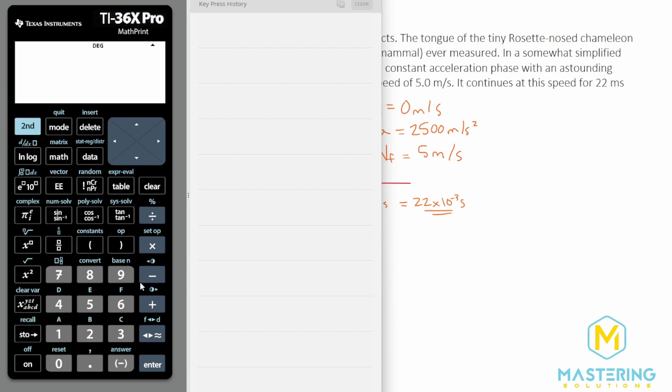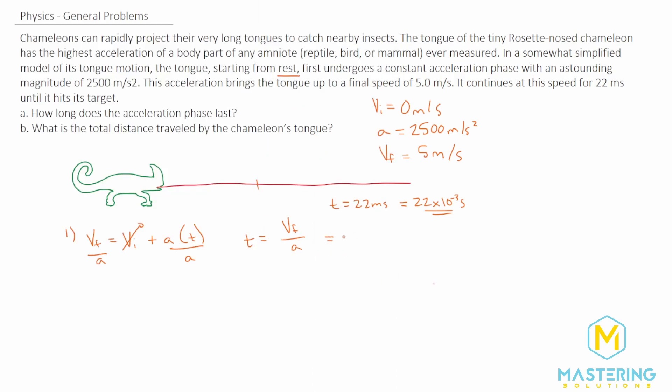Time is simply equal to the final velocity divided by the acceleration. The final velocity was five meters per second divided by the acceleration of 2,500, which gives us 0.002 seconds. That's two times 10 to the negative three seconds, or two milliseconds.